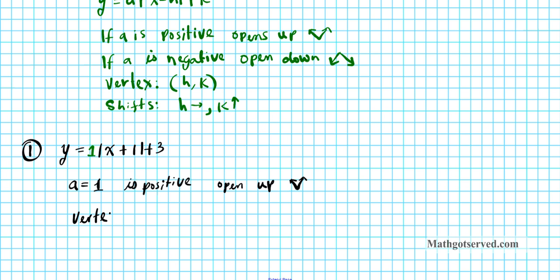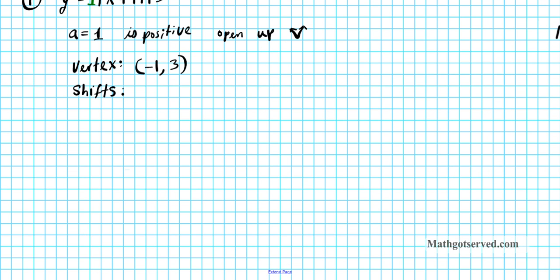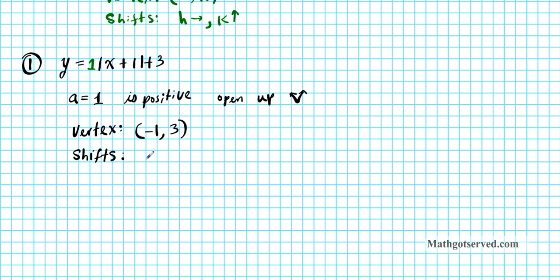What's the vertex of this function? You take the number next to x and do the opposite of that — negative one — for the horizontal movement. The number outside, three, you just take it as it is. So the vertex is negative one, three. The shifts are one unit to the left and three units up.